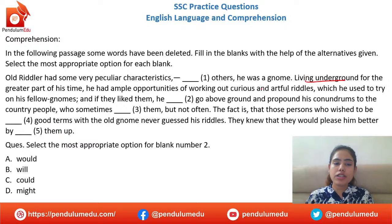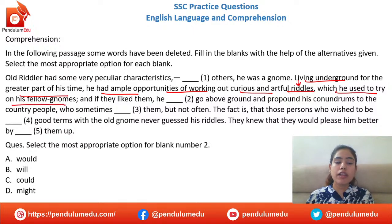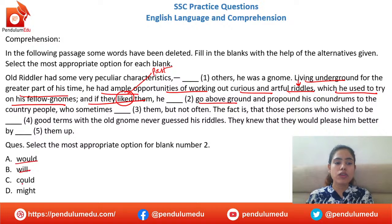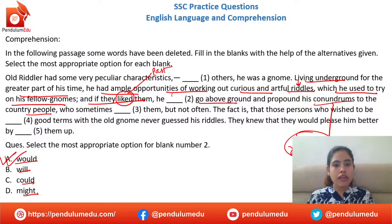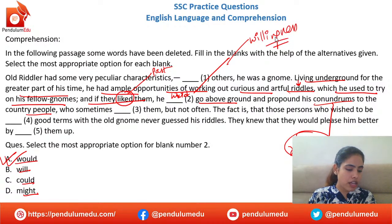Next: 'Living underground for the greater part of his time, he had ample opportunities of working out curious and artful riddles, which he used to try on his fellow gnomes. And if they liked them, he ___ go above ground.' Options: would, will, could, might. We are in past tense throughout. 'Would' expresses willingness — unki swaichha — so option A, 'would,' is absolutely correct.